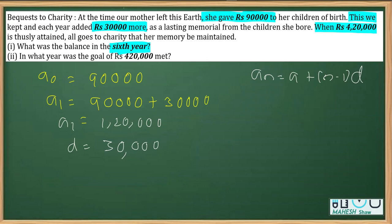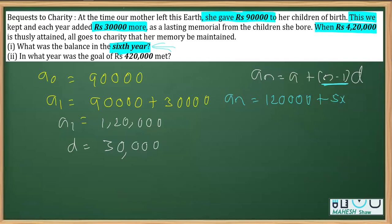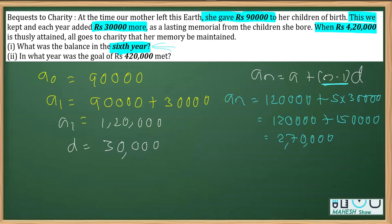We replace n with 6 and a with ₹1,20,000. So we get: a₆ = 1,20,000 + (6−1) × 30,000 = 1,20,000 + 5 × 30,000. Now 5 × 30,000 = 1,50,000, so 1,20,000 + 1,50,000 gives us ₹2,70,000. Therefore, ₹2,70,000 will be the balance in the sixth year.